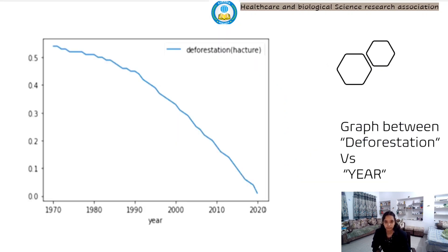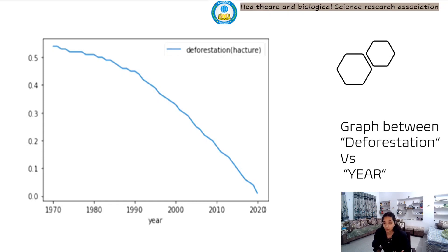In Figure 4, we have the graph between deforestation versus year. We can see that deforestation is continuously decreasing day by day. This is a positive sign that China's government is now aware of the deforestation problem and is trying to stop it.